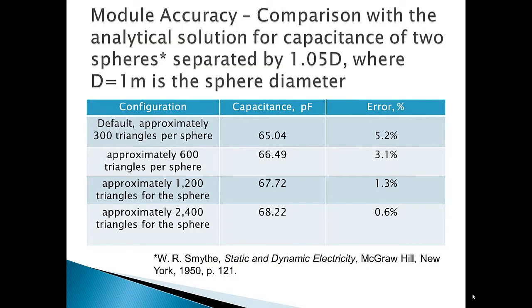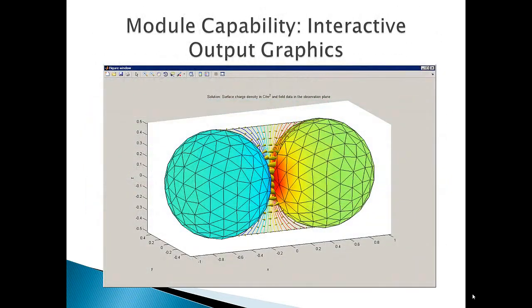Model accuracy is quite good as compared with an analytical solution for the capacitance of two very closely spaced spheres. As expected, increasing the number of triangles used decreases the relative error.